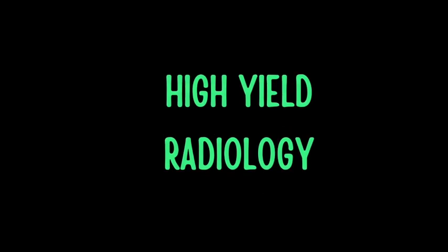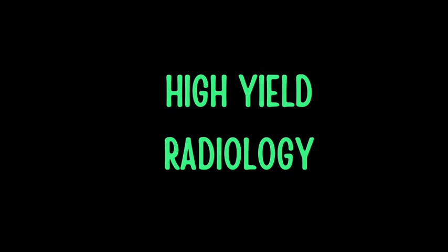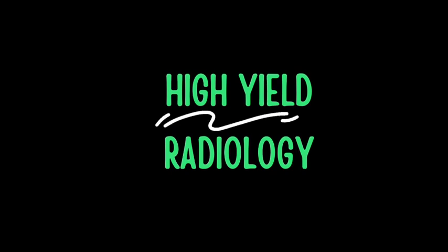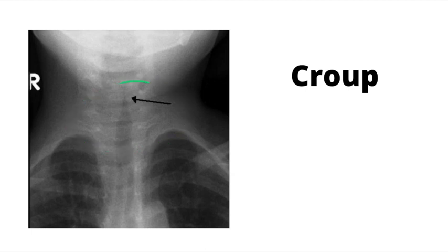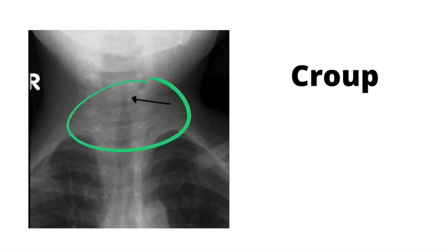Let's do some extremely high yield radiographic images and discuss the topics related to them. This is croup, most commonly seen in the pediatric population. The green circle is highlighting the steeple sign that is classically seen in patients with croup. Memorize every single image shown — they're all high yield.